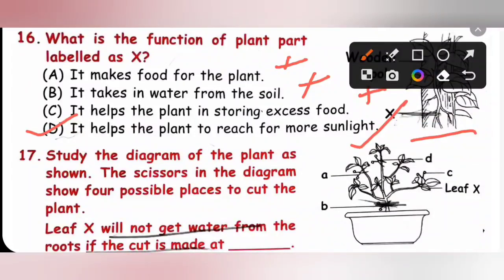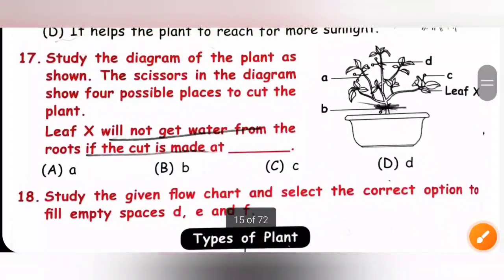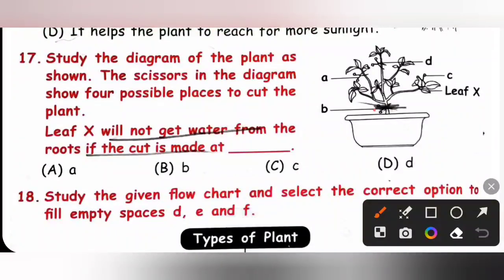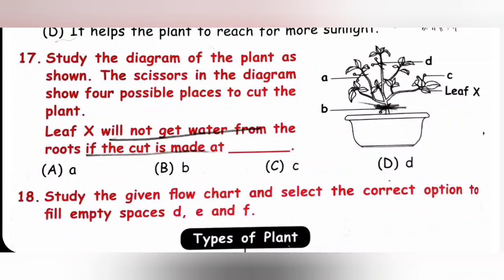Seventeenth, study the diagram of the plant as shown. The scissors in the diagram show four possible places to cut the plant. Leaf eggs will not get water from the root if the cut is made at dash. We know stem transports water and minerals from root to different parts of the plant. So leaf eggs will not get water from the root if the cut is made at B. Option B is the correct answer.